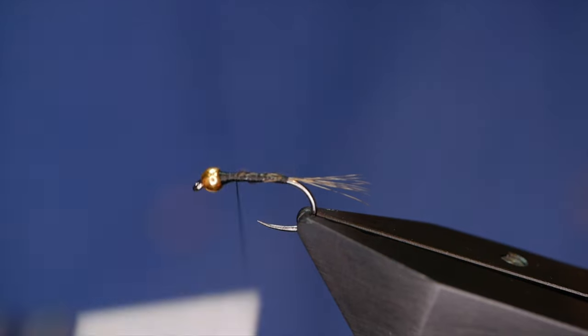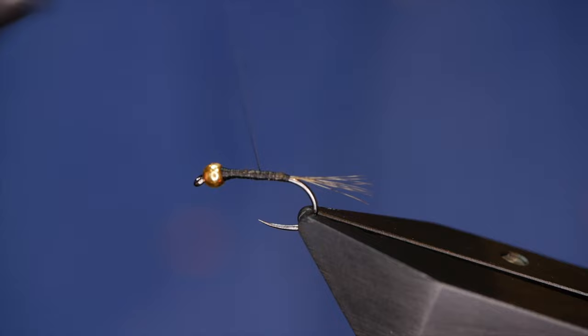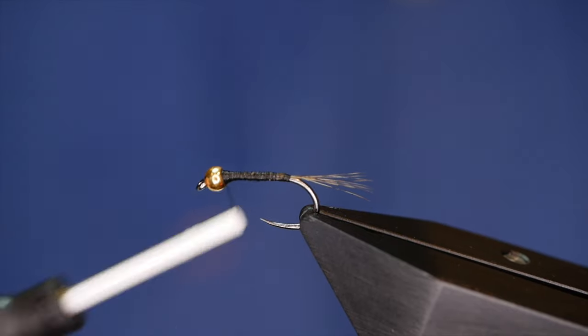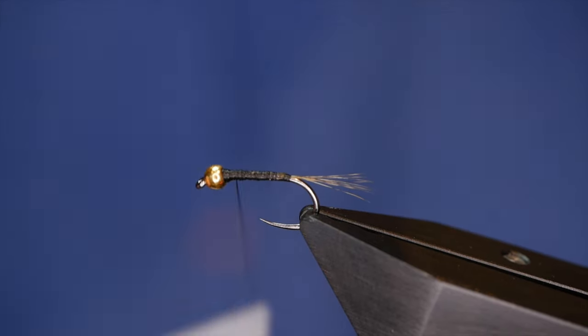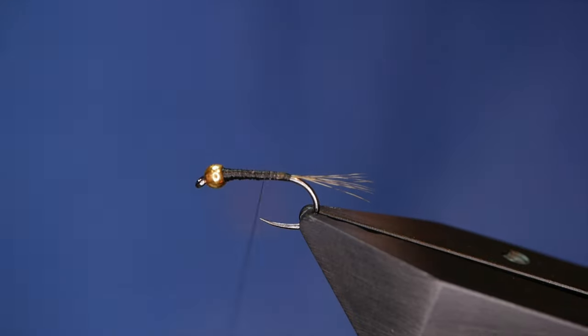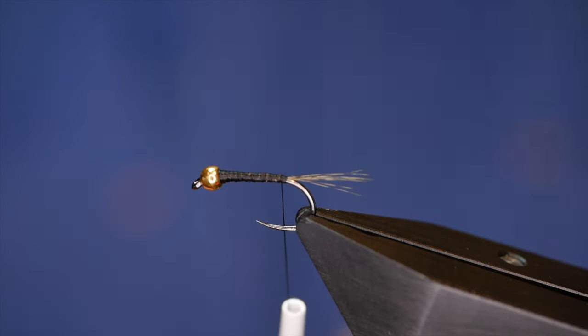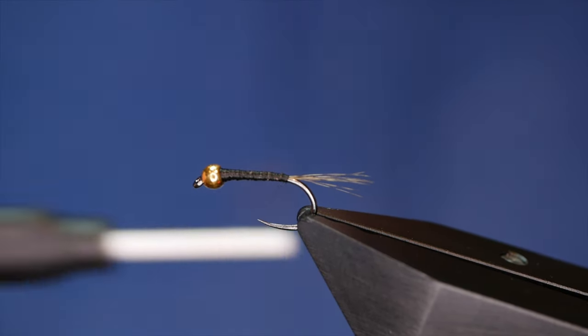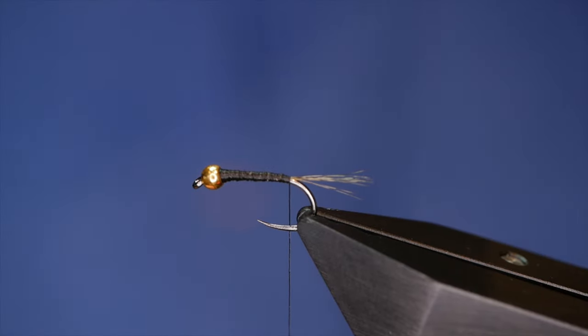I do want to create a bit of a taper into the body. When you're using nano silk this can be a chore, it's very thin and getting that bulked up to create the taper can be a pain, but I still think the nano silk's pros outweigh its cons. I've brought my thread all the way back to where my tail starts.